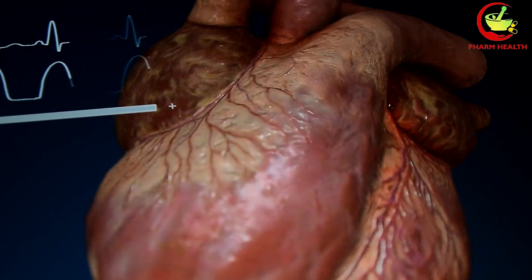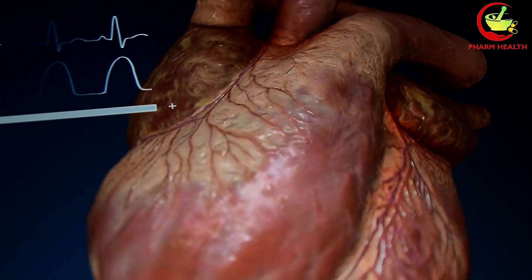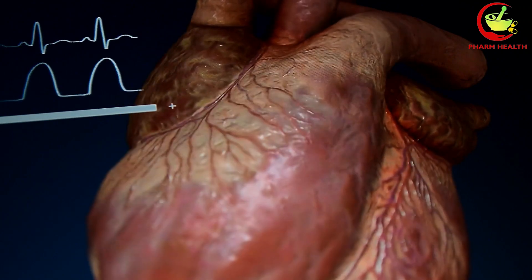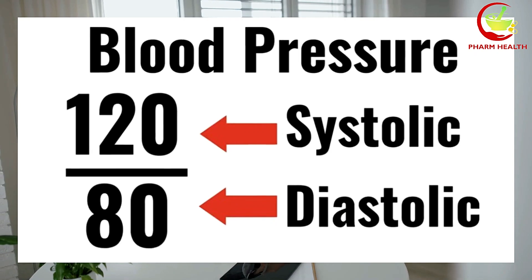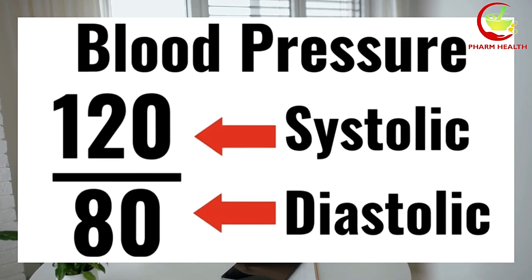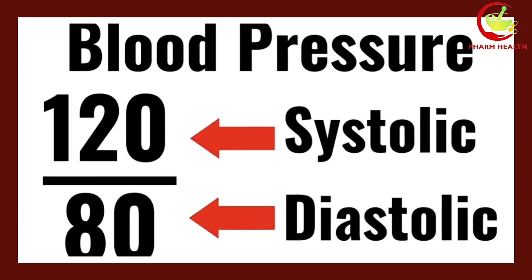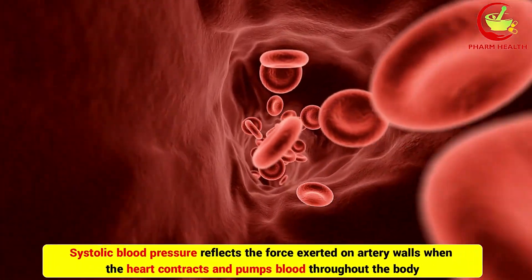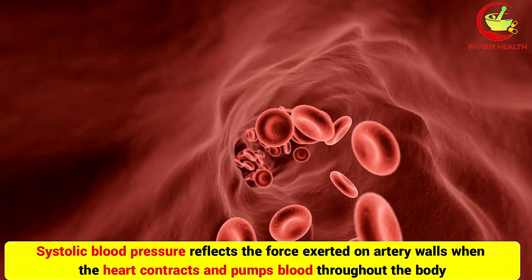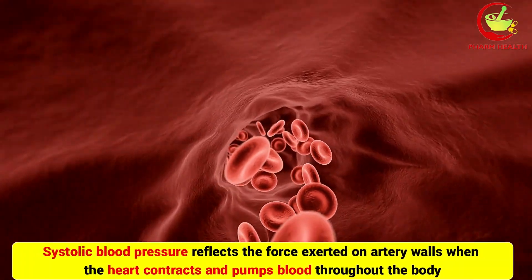Blood pressure readings provide valuable insights into how efficiently our heart is working and the condition of our arteries. However, while both systolic and diastolic readings are significant, they serve different purposes. Systolic blood pressure reflects the force exerted on artery walls when the heart contracts and pumps blood throughout the body.